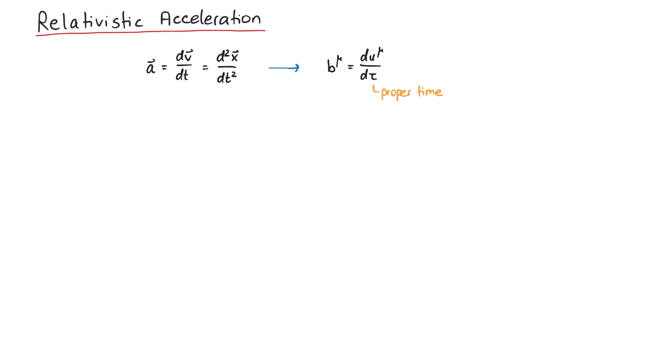If you use the time derivative instead, b mu would not be a 4-vector. You can also write this as the second derivative of x mu with respect to proper time.